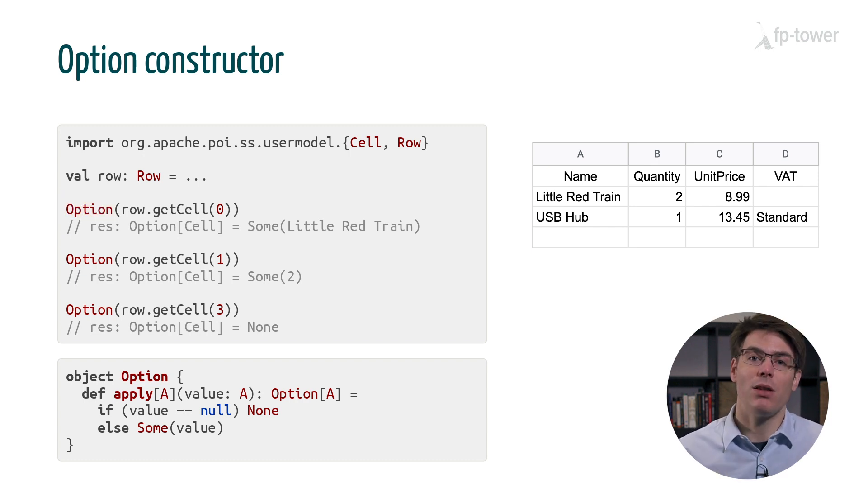An easy way to sidestep this issue is to use the Option constructor. Indeed, the apply method on the Option companion object checks if the argument is null, and if it is, it returns None. This means that we only need to wrap the call of getCell with Option and it will handle null values automatically. This technique is much more ergonomic than if-then-else statements.